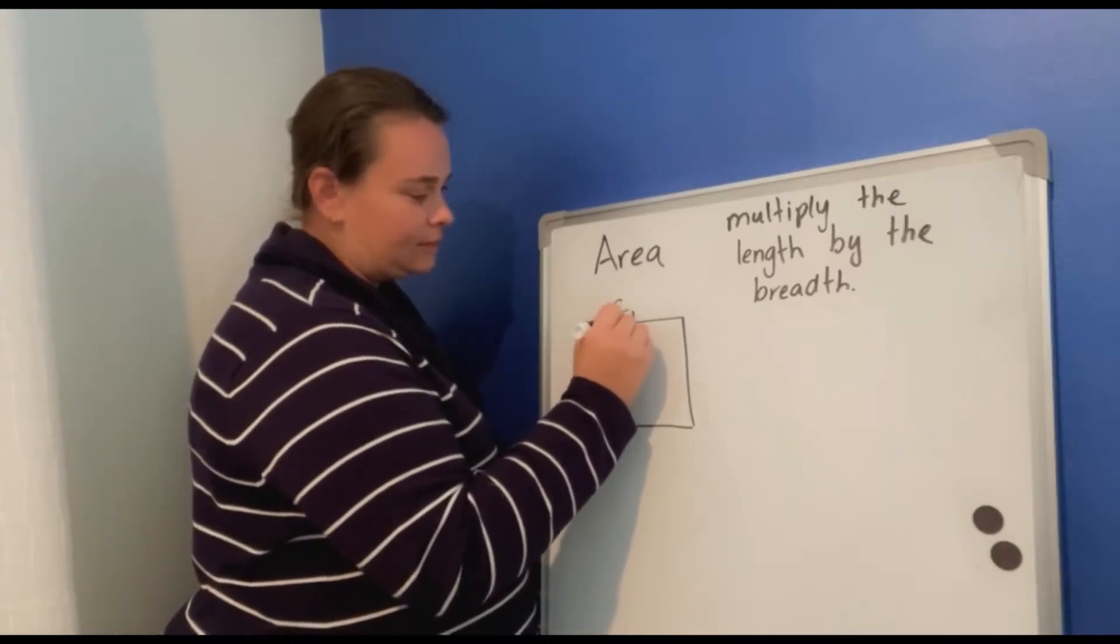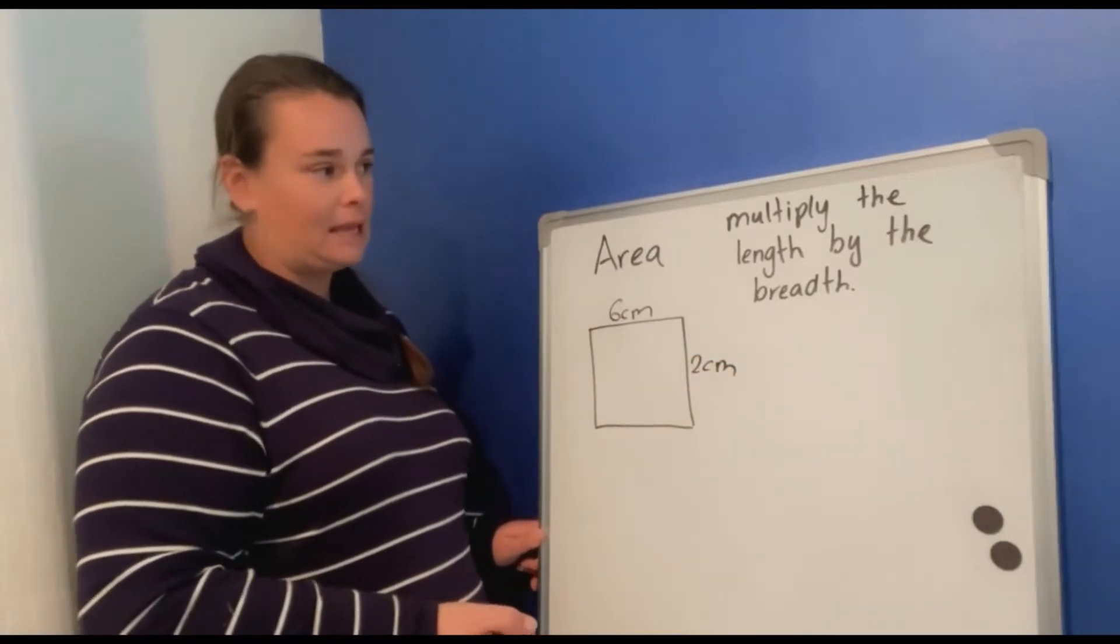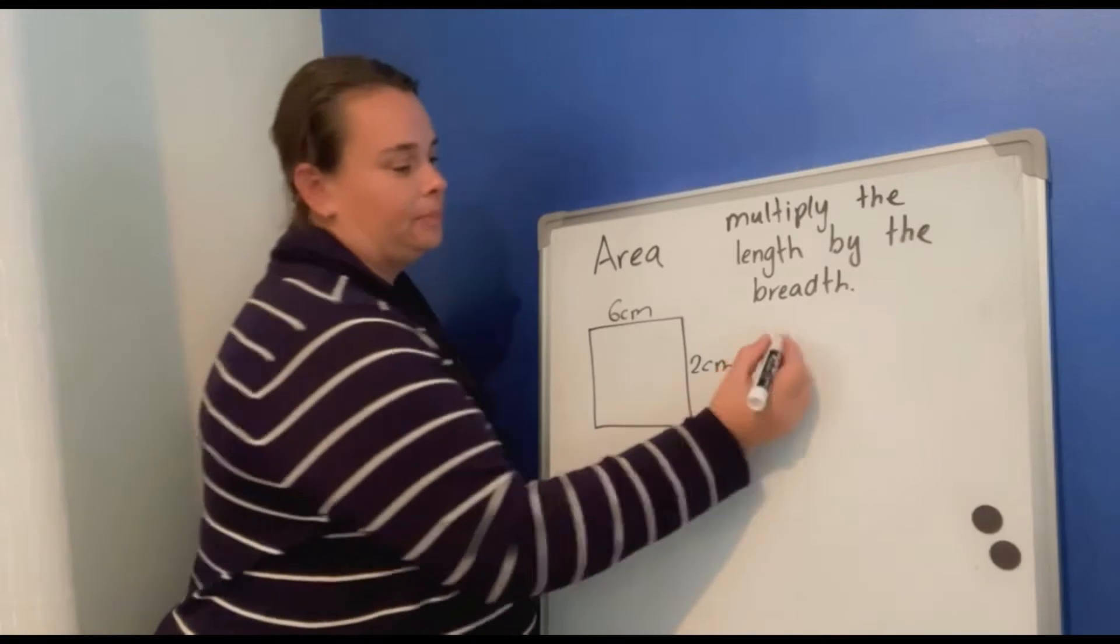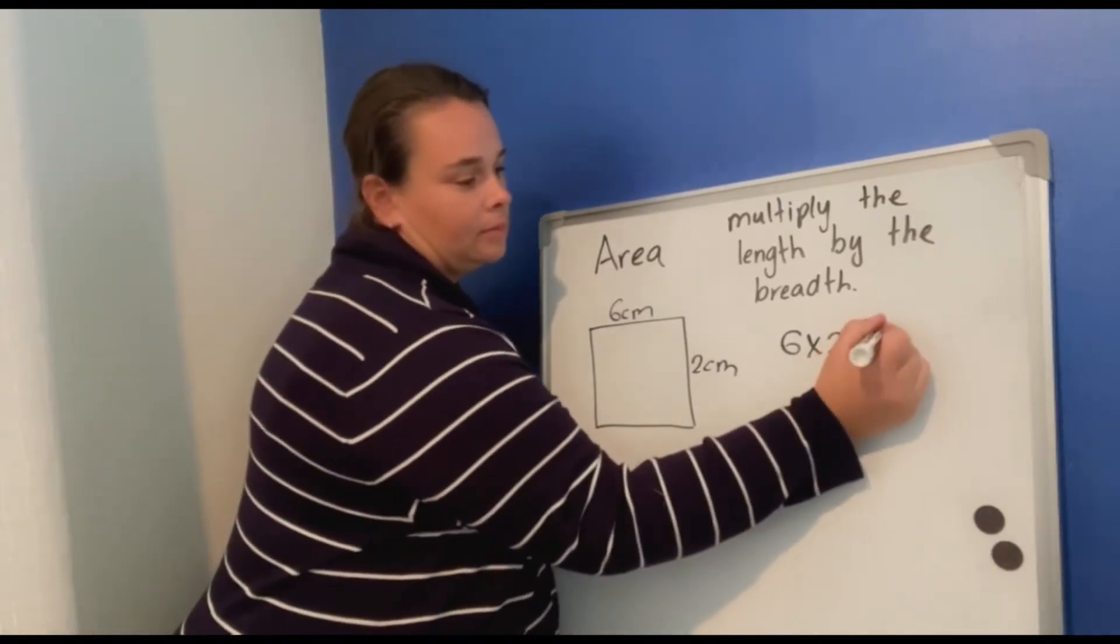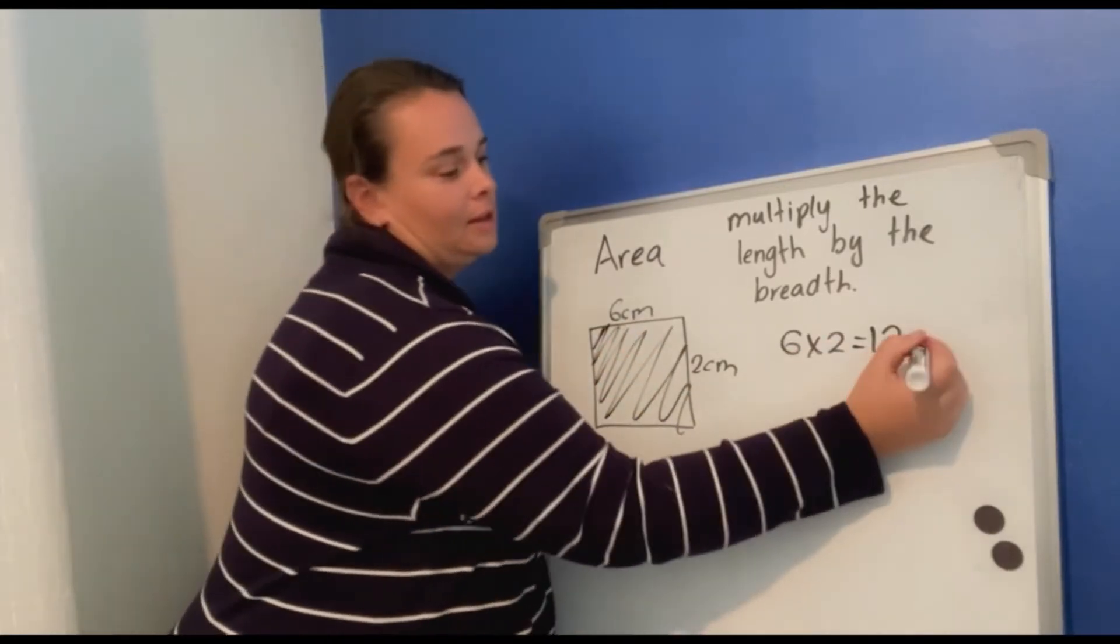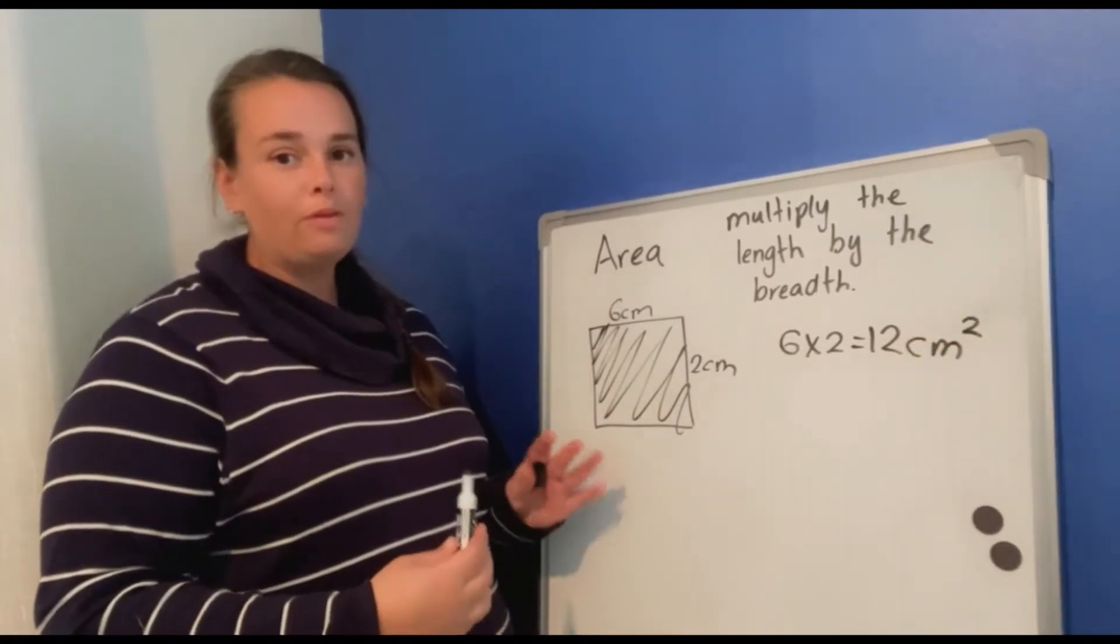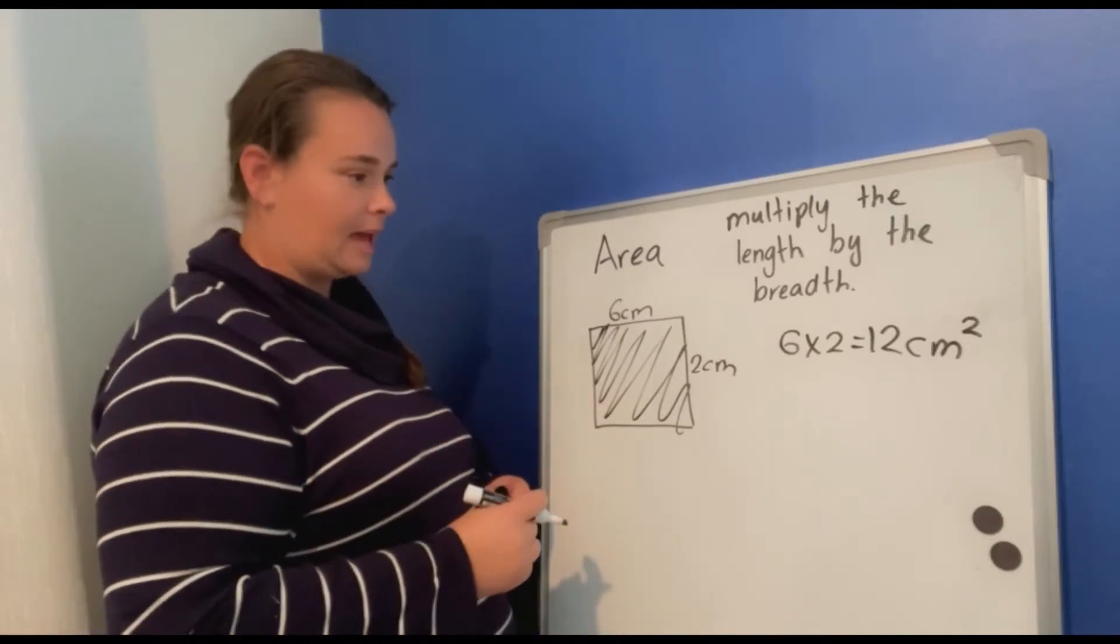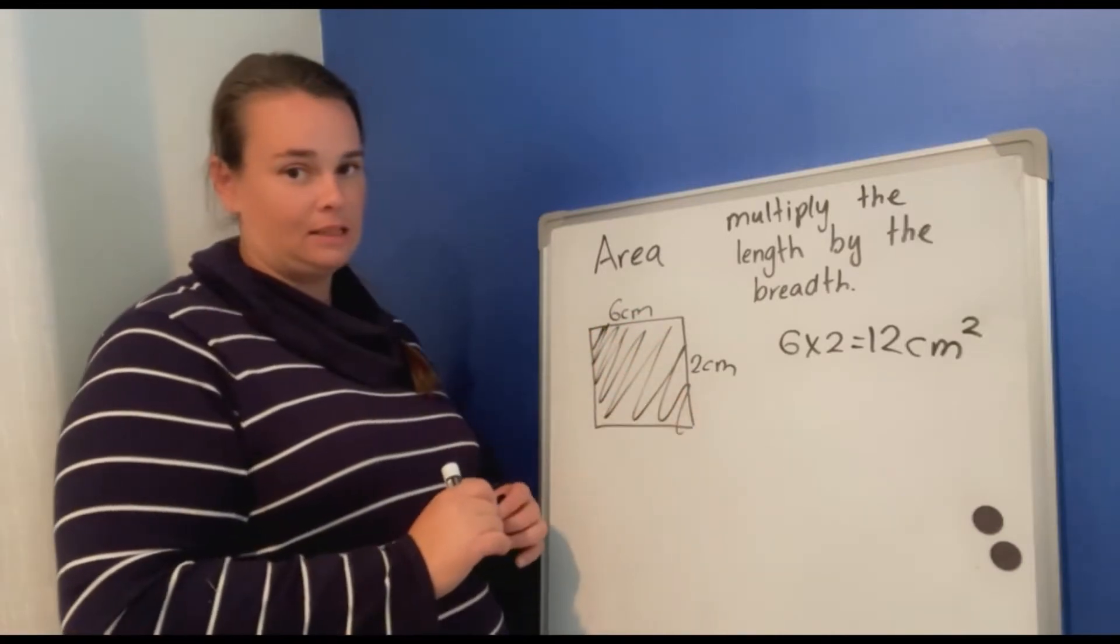Six centimeters by two centimeters. And because area means multiply the length by the breadth, we need to multiply it. So six times two is twelve. That means all this area here inside the shape is twelve centimeters squared. When we work with area, we need to put the little two up top to say that it's squared. Okay, so this shape, six by two centimeters, the inside is twelve centimeters squared.